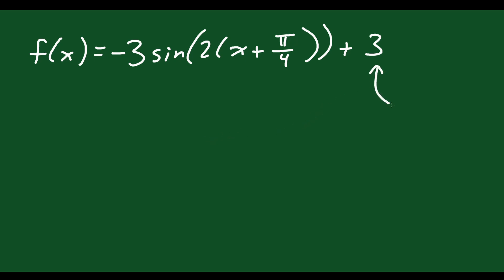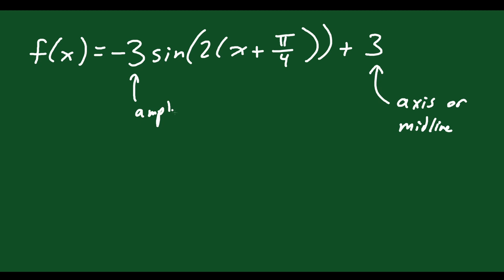If you think of this 3 on the end, that represents your axis, or the equation of your midline — the horizontal line going through the middle of your graph. This 3 at the front is your amplitude, which is the distance from the middle to the top or to the bottom. Or you could think of it as the total distance from the bottom to the very top divided by 2 — it's half your total height.